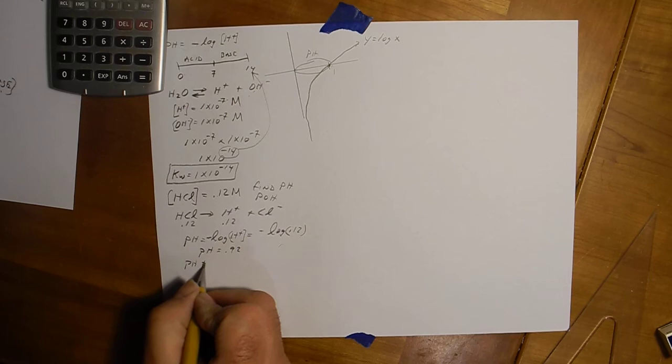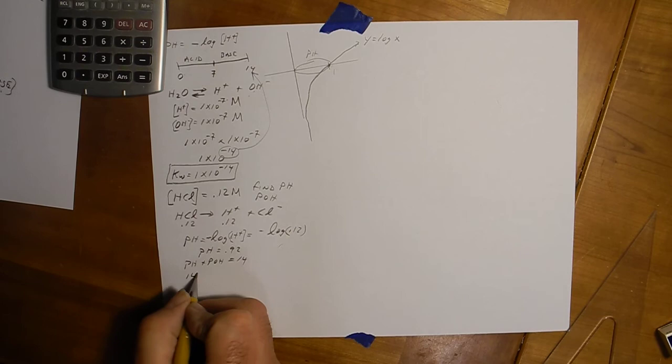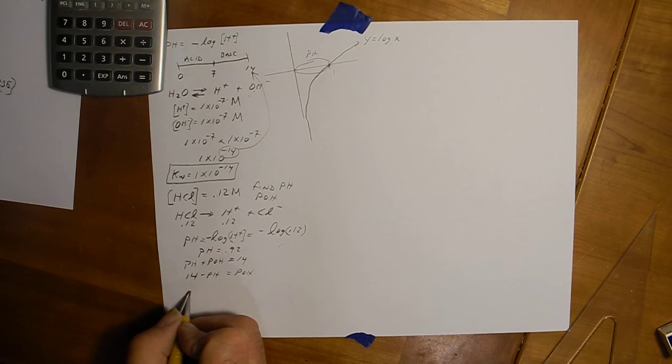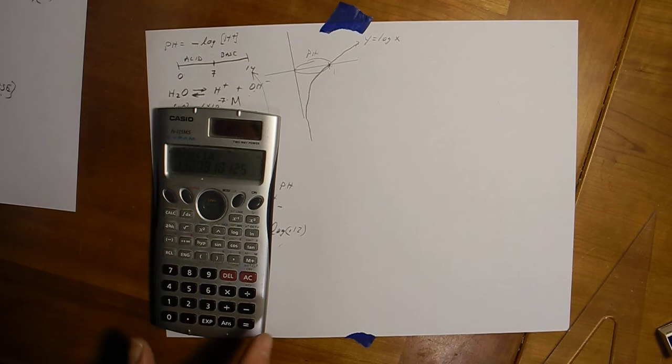To find pOH, super simple. pH plus pOH is always equal to 14. So 14 minus 0.92. What's kind of cool about when you have in your calculator, since it's already negative, just kind of like add 14 to it and I'll subtract it. And so that's 13.079.